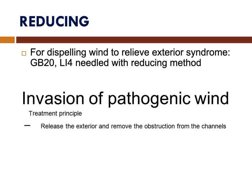How to use the reducing method. One, for dispelling wind to relieve exterior syndrome. The points to use are GB20 and LI4. In invasion of pathogenic wind, the treatment principle is to release the exterior and remove the obstruction from the channels.